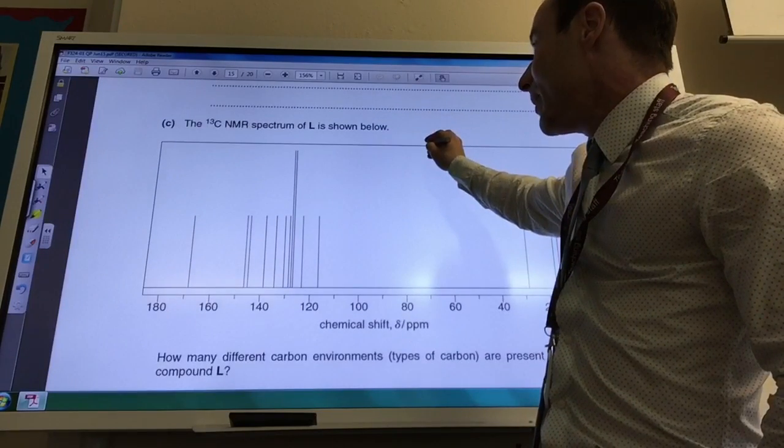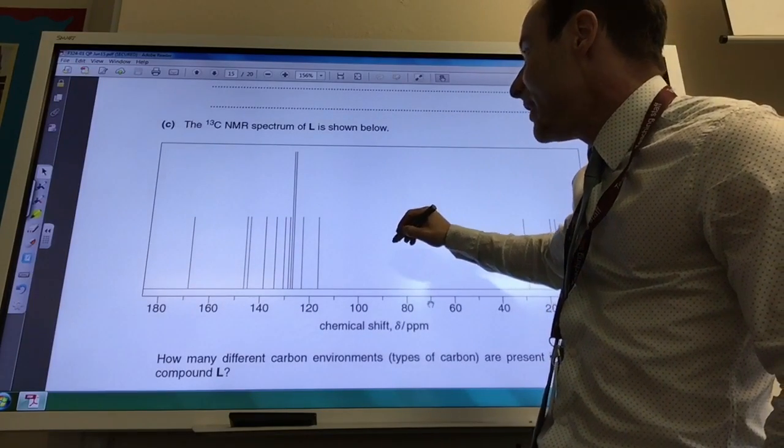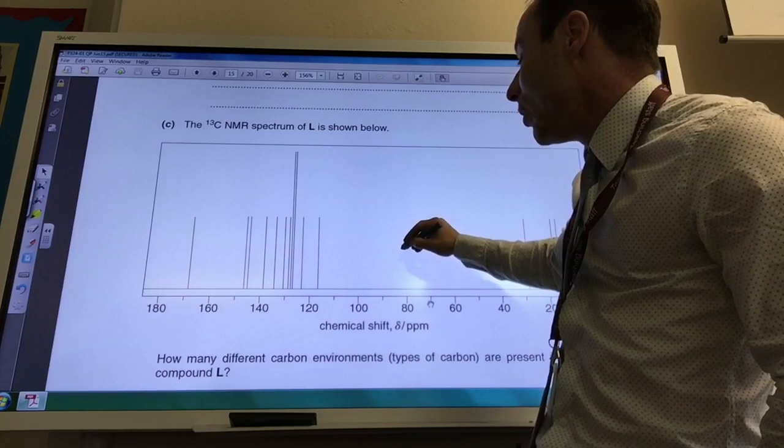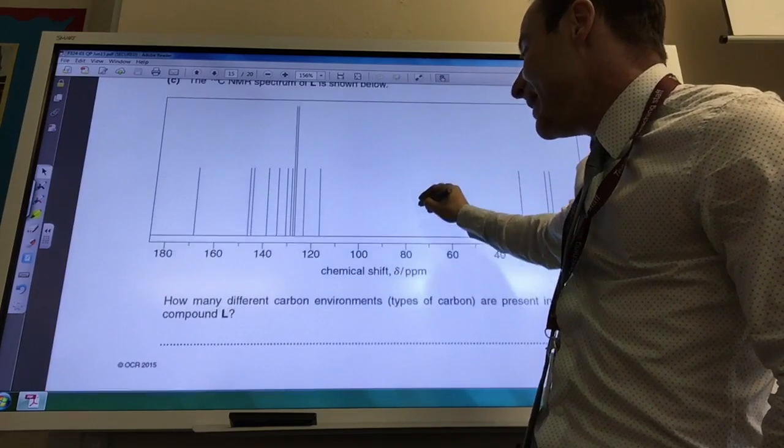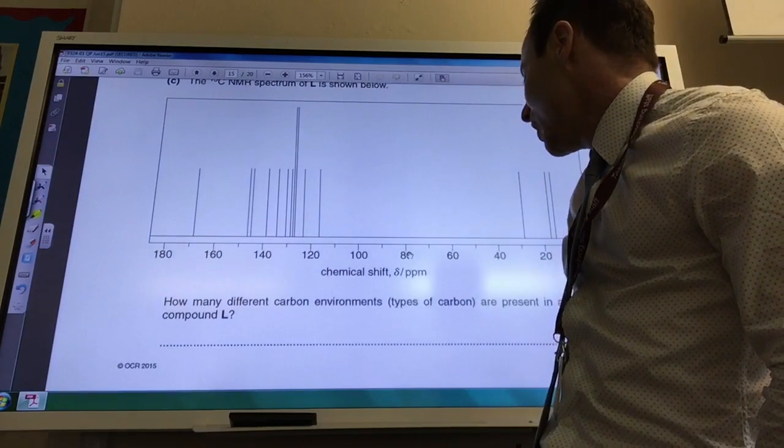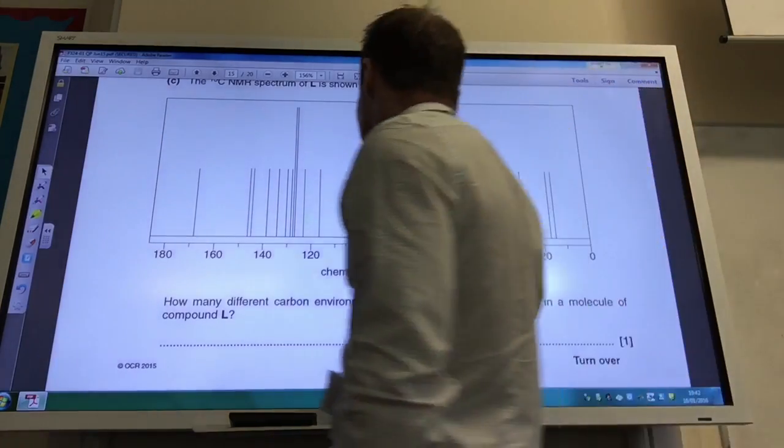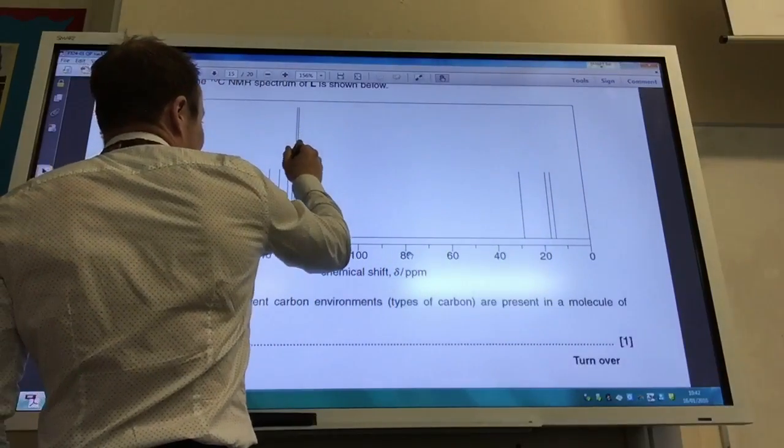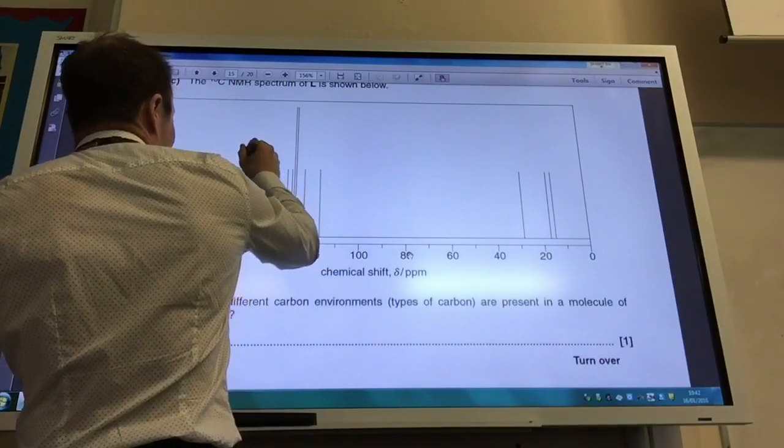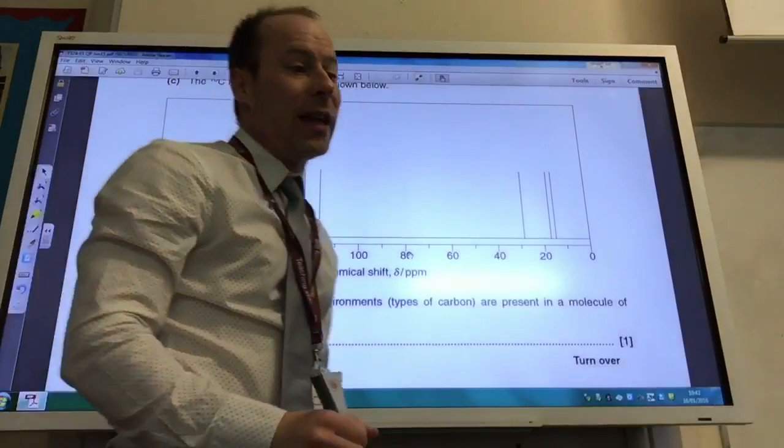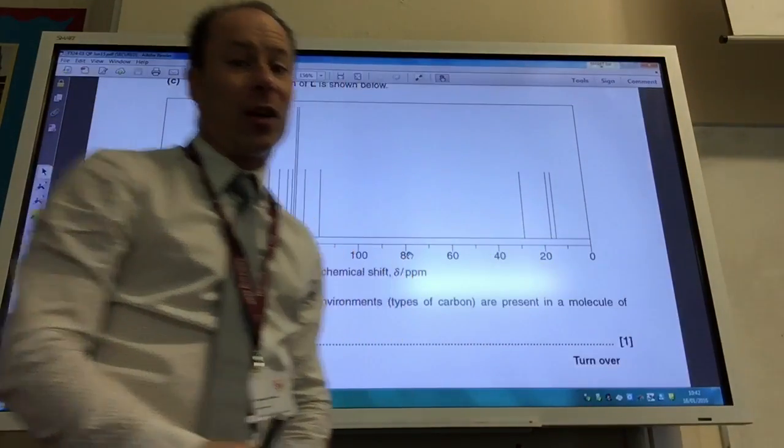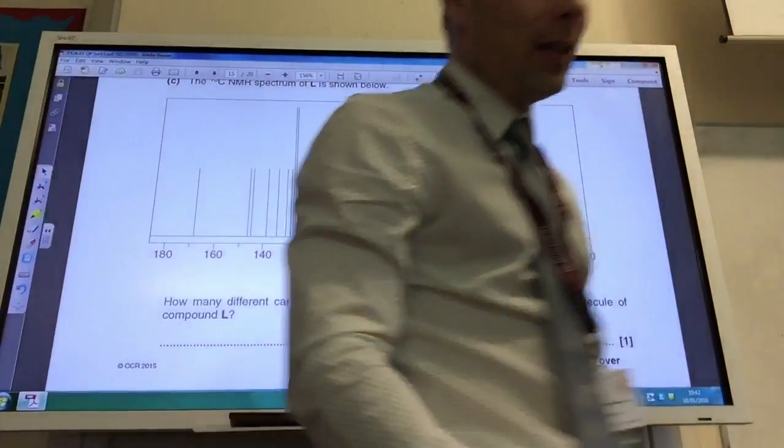And then things get a little bit scary. So the carbon-13 NMR is shown below of L. How many different carbon environments are there present in compound L? So this is okay, you just count 1, 2, 3, 4, 5, 6, 7, 8, 9, 10, 11, 12, 13, 14. So there are 14 environments of carbon because I've got 14 lines.